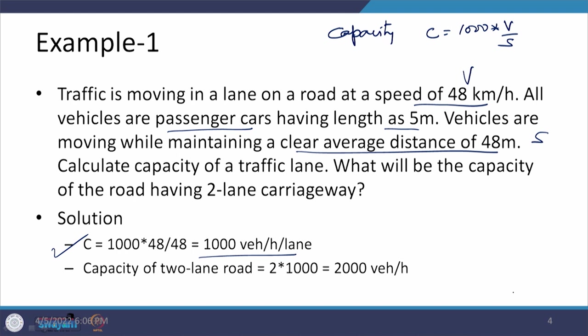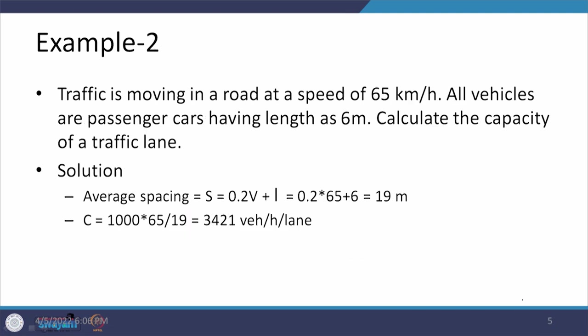If this road has two lanes on the carriageway, then the capacity of the road is the multiplication of 1000 with 2, giving 2000 vehicles per hour in this case.